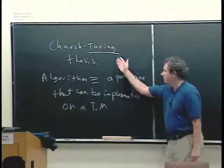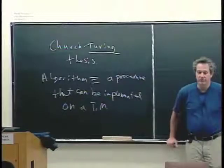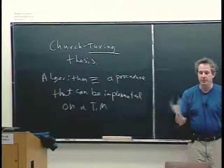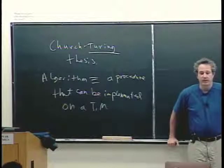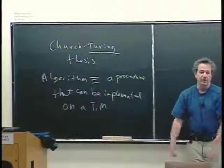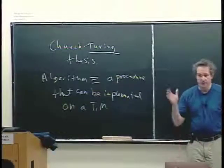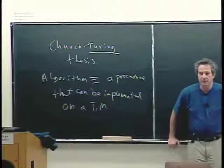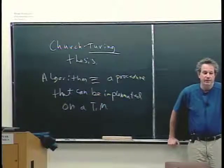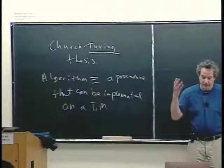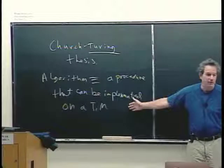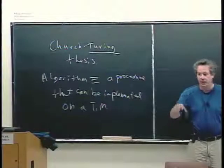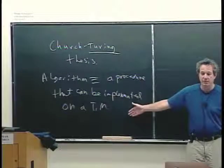Since this was articulated in the 30s and 40s, lots of people have looked at this in more detail and come up with other formalisms for what they said was an algorithm. Then others have shown that those formalisms are actually equivalent to what can be done on a Turing machine. People have thought of lots of different, sometimes weird, formalisms — to some extent with the intention of showing this wasn't adequate, but then again somebody would show that yes, it is adequate.